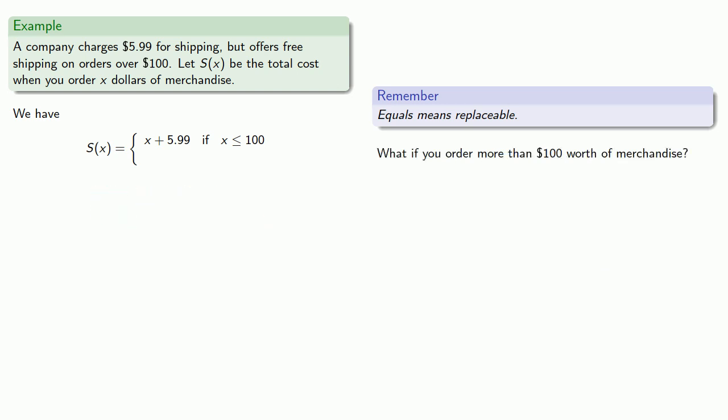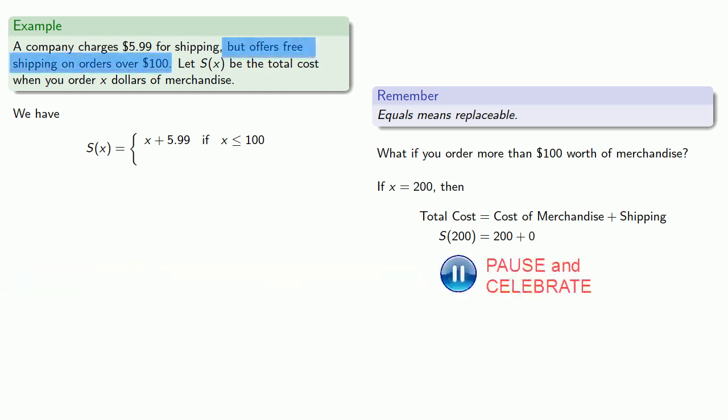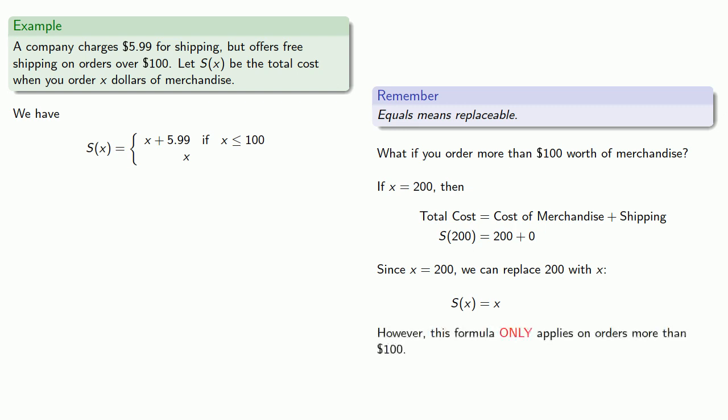What if you order more than $100 worth of merchandise? Again, we can try some specific examples. If x equals $200, then our total cost is the cost of the merchandise plus the cost of shipping. And so that's going to be $200 plus our shipping is going to be free, so it'll cost zero. And since x equals $200, we can replace $200 with x and get our formula. So our formula, but this only applies on orders more than $100. So we can write down our formula with a note that this only holds if x is greater than $100.